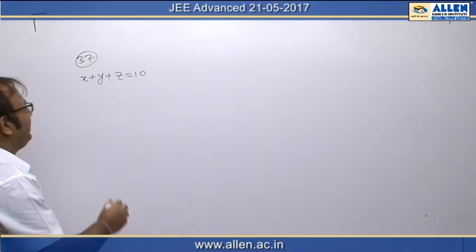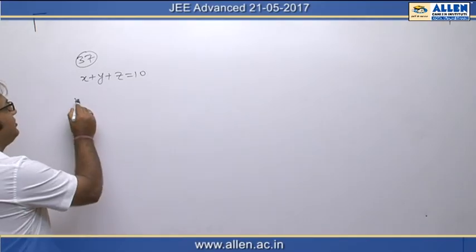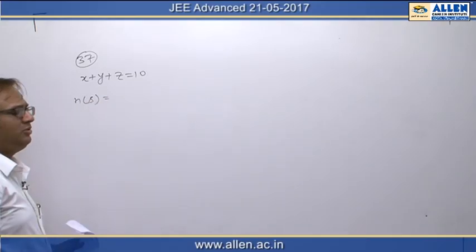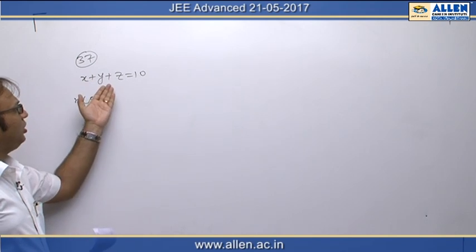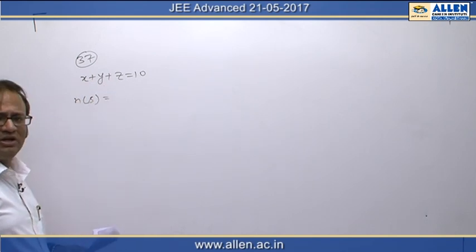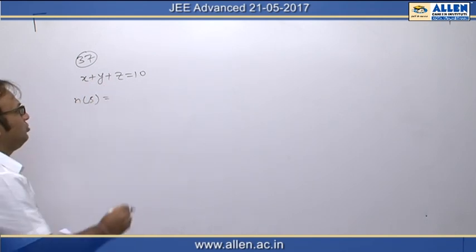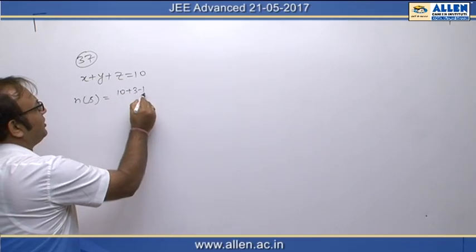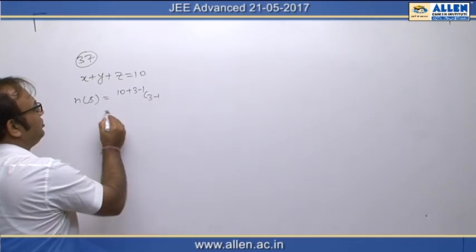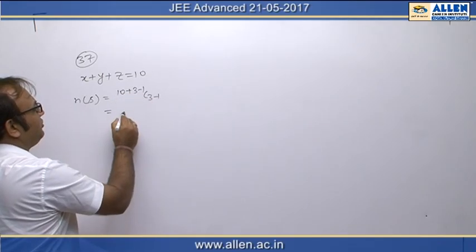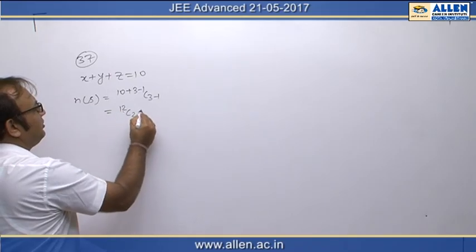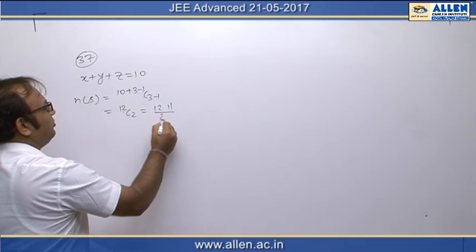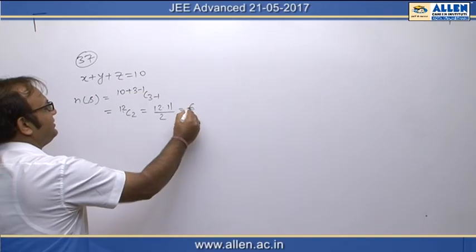For that we first write the sample space. The sample space of this experiment is going to be all the non-negative integral solutions of this equation. That is n plus 3 minus 1 C 3 minus 1, which makes it 12C2, that is 12 into 11 by 2, and that is 66.